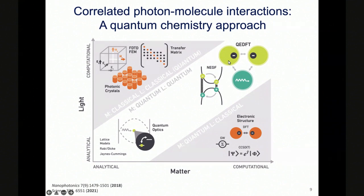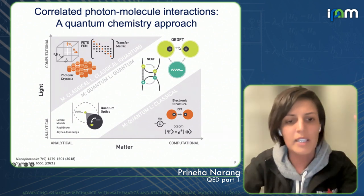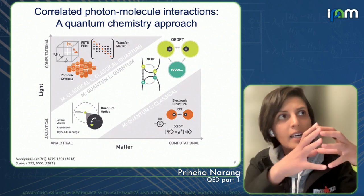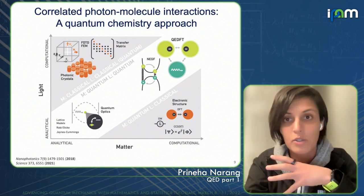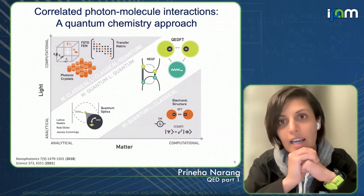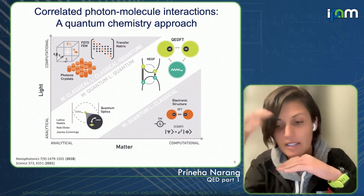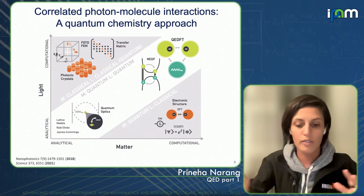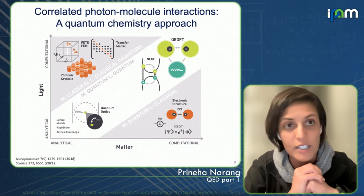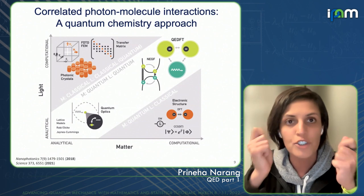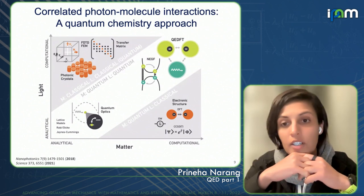There's a class of methods that sit towards the top right of this quadrant, going beyond NEGF methods, where you formally and computationally combine QED and electronic structure theory. You have everything you want to know about the photon, the quantized nature of light, the electrons, and you're reasonably able to capture correlations and the nuclei as well. You could think of QED plus mean field, QED-Hartree-Fock, QED-TDDFT, QED coupled cluster, and so on.